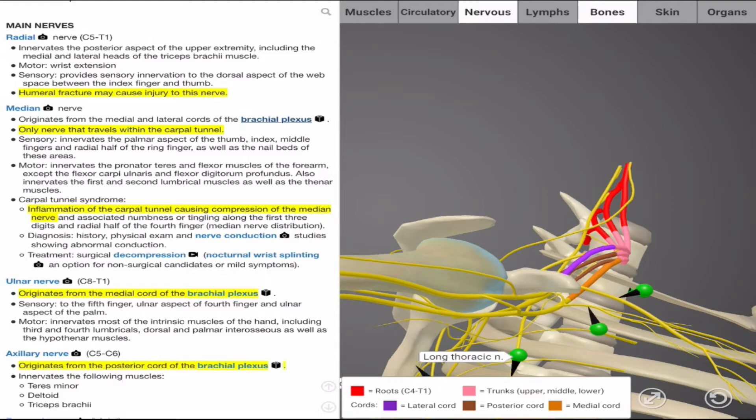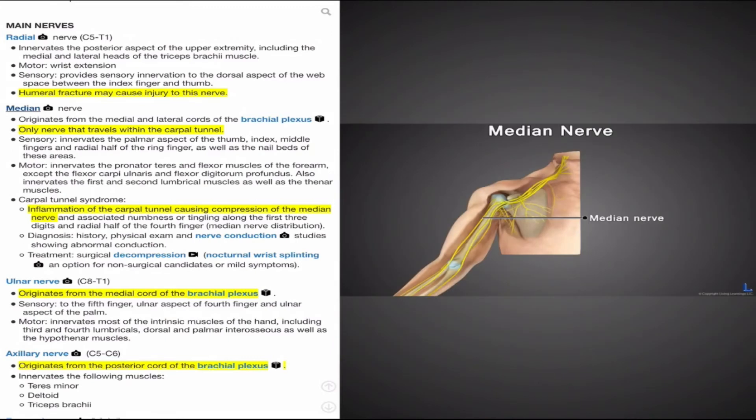Like the radial nerve, the median nerve also has both sensory and motor function. Sensory functions involve innervation of the palmar aspect of the hand, including the thumb, the index, middle, and radial half of the ring finger. Motor function involves innervation of the pronator teres and flexors of the forearm, allowing for the forearm to flex and pronate. Exceptions to this are the flexor carpi ulnaris and the flexor digitorum profundus, which receive their innervations from the ulnar nerve. Additional motor functions of the median nerve include innervation to the first and second lumbricals and thenar muscles of the hand.